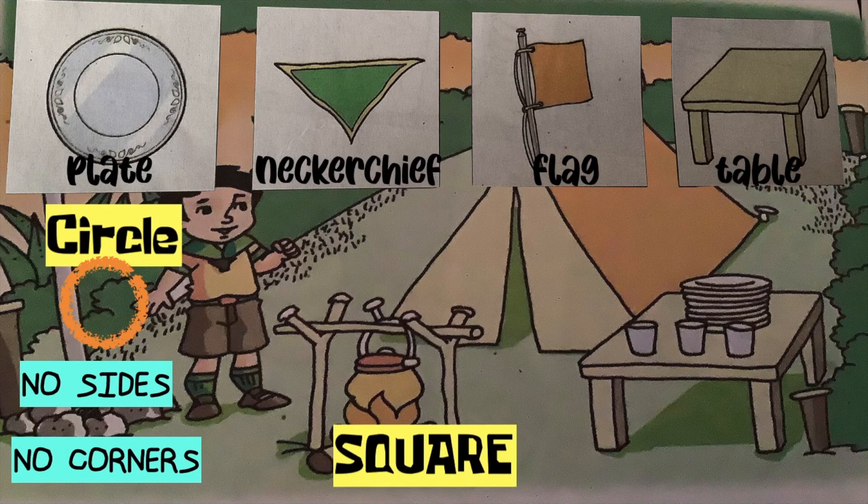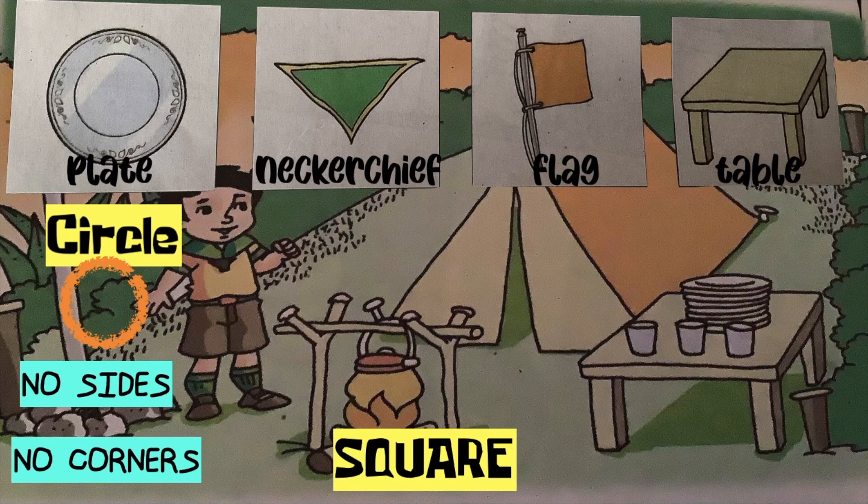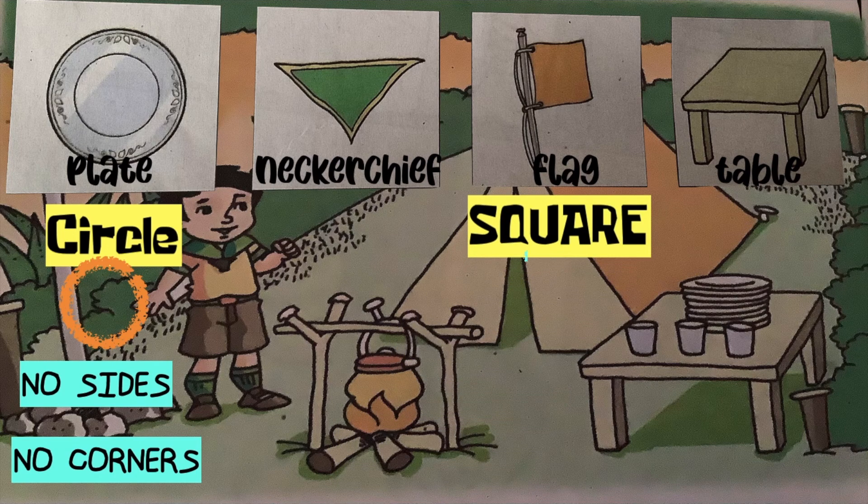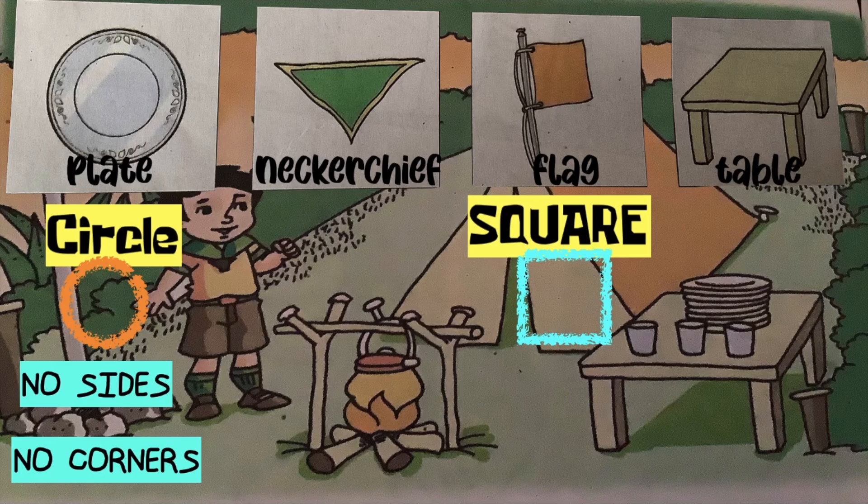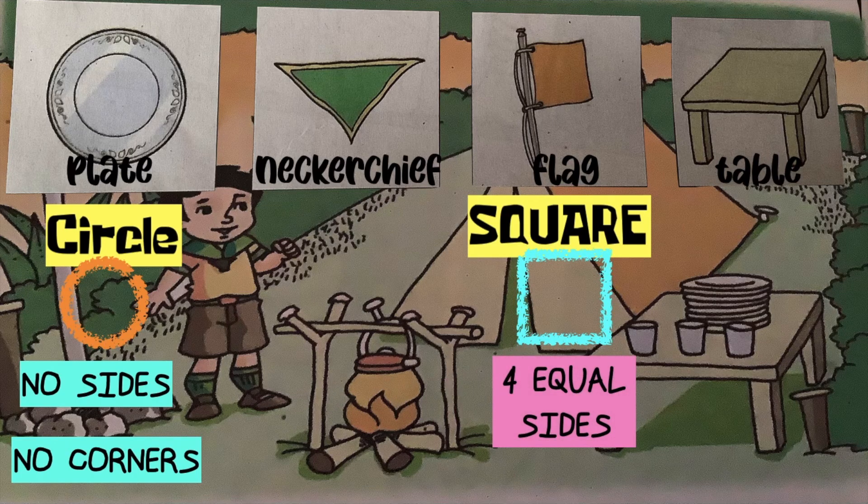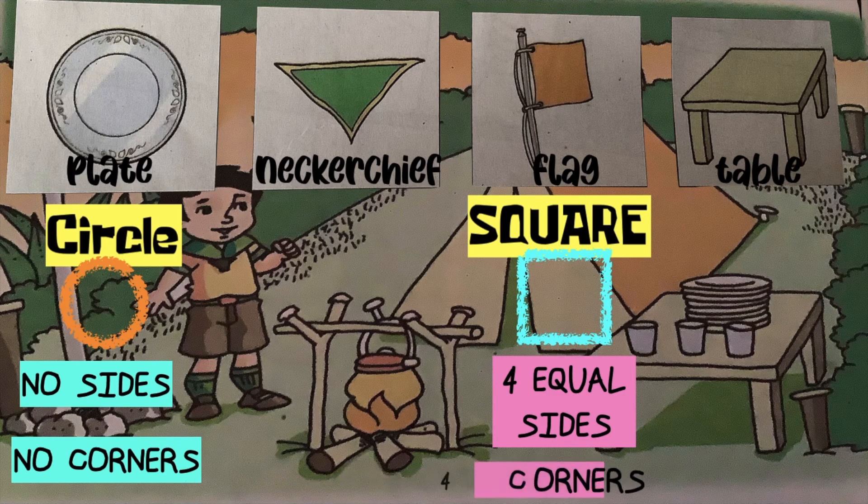How about the square? Which of the objects drawn shows a square? That's correct children! It's a flag. How many equal sides does a square have? Very good! It has four equal sides. How about corners? Good job children! It has four corners.